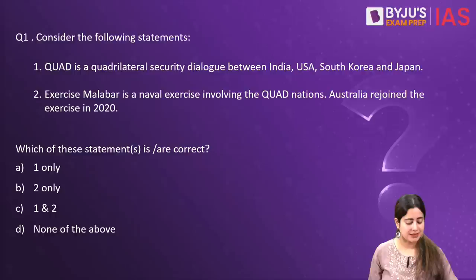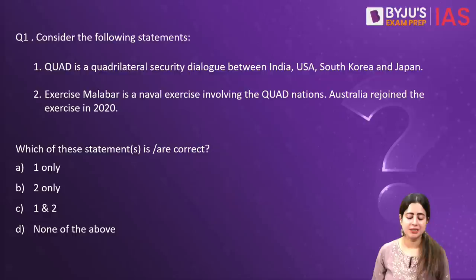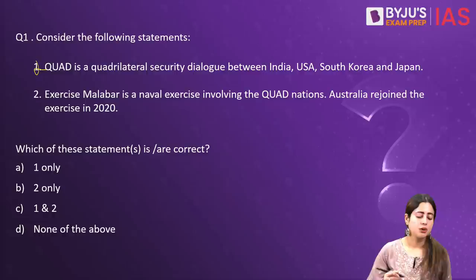The first statement of the first question says QUAD or the Quadrilateral Security Dialogue is a diplomatic partnership between India, US, South Korea and Japan. Clearly, this is a wrong statement because although QUAD comprises four countries, it is not South Korea.